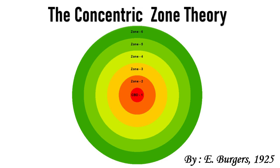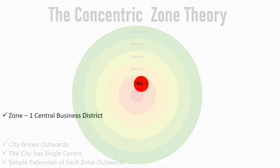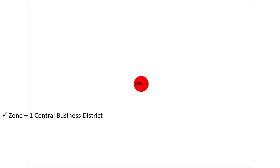He made certain assumptions for this: that the city grows outwards in concentric zones or rings if there are no physical barriers such as rivers or hills to distort the pattern. The city has a single center, and growth is accomplished by a simple extension of each zone outwards into the next zone. Zone One: Central Business District.